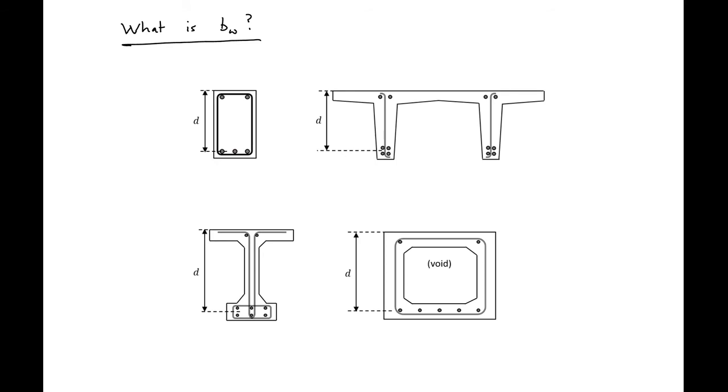Next we're going to look at what our BW is. We may have several different section types that we'll look at. It's not always as simple as just a rectangular section. We need to look at what the shear stress distribution is across the section depth. In a rectangular beam we'll have a parabolic shear stress distribution.